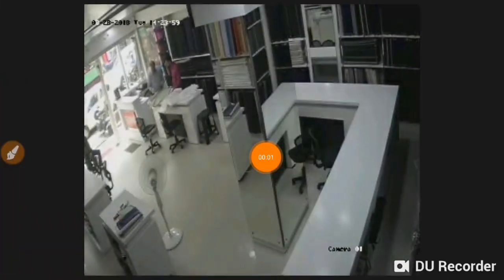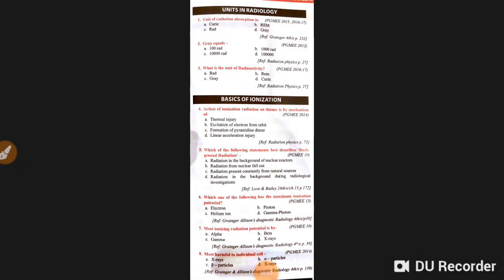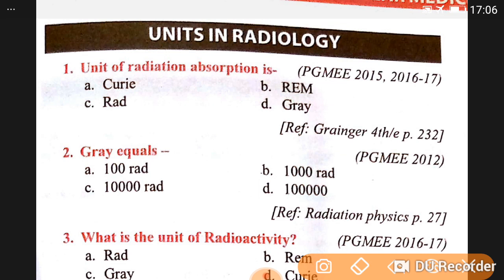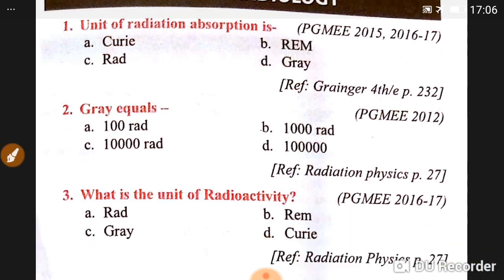Good evening doctors, welcome again. Today's topic is units in radiology. The first unit of radiation absorption is the gray. Second, one gray equals 200 rads.